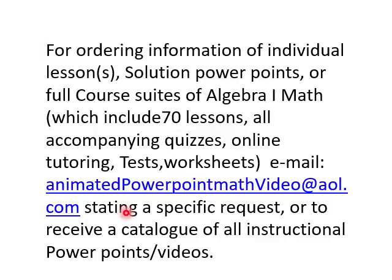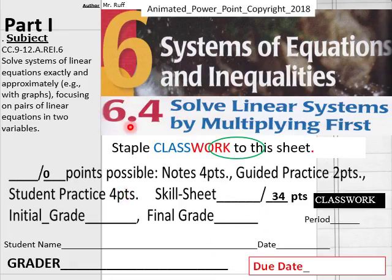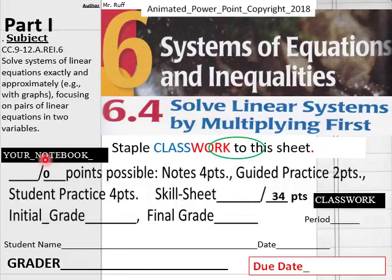Hello, everybody. We're getting ready to do Lesson 6.4 of Algebra 1 Math. This will be Part 1. You want Part 2, Part 3, you know where to email me. 6.4, Part 1. Here is the standard. Solving linear systems by multiplying first. We have a 34 point skill sheet here with this one and we have no notes here to take. So it's all going to be handed in today.